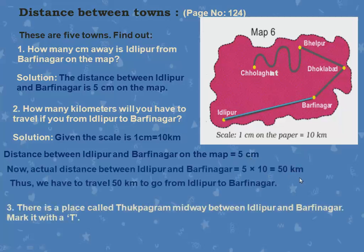There is a place called Tukpagram midway between Idlipur and Barfinagar. Midway means exactly in between — mark it with T. The total distance is 5 centimeters, so half is 2.5 centimeters. Keep the scale and at exactly 2.5 centimeters, mark a dot and label it T.